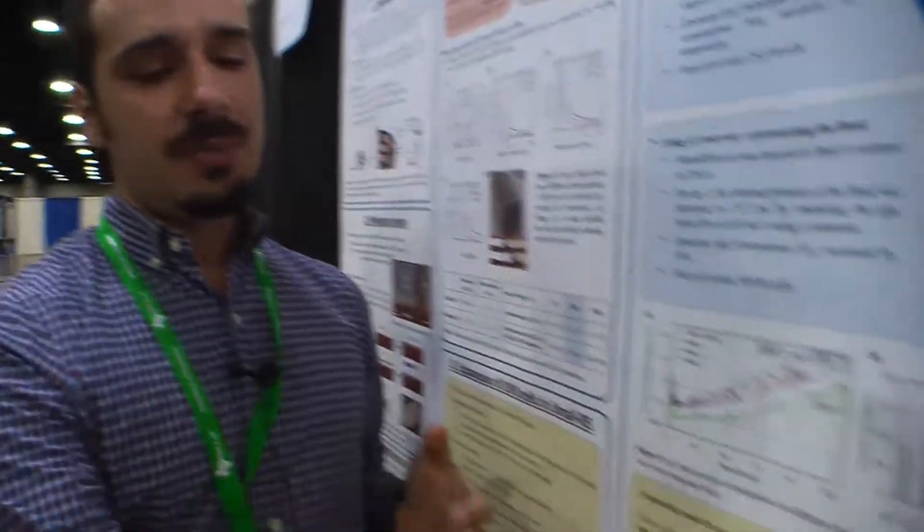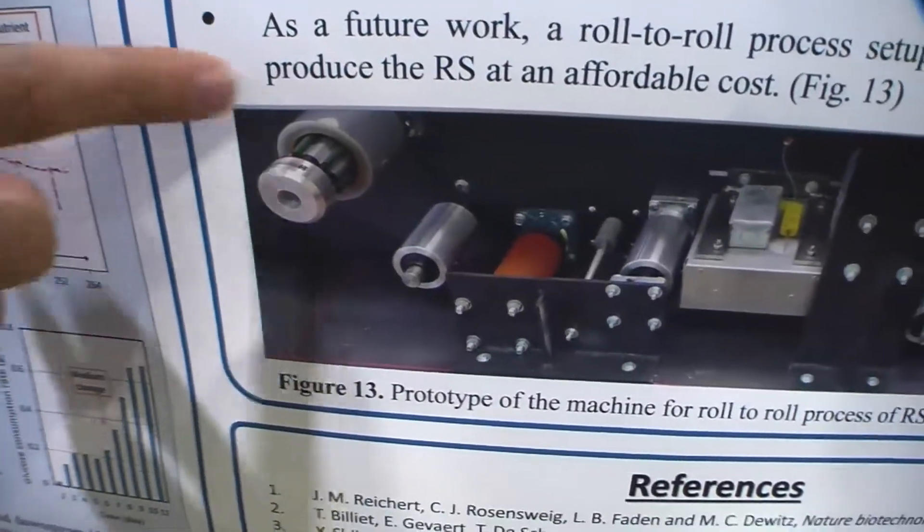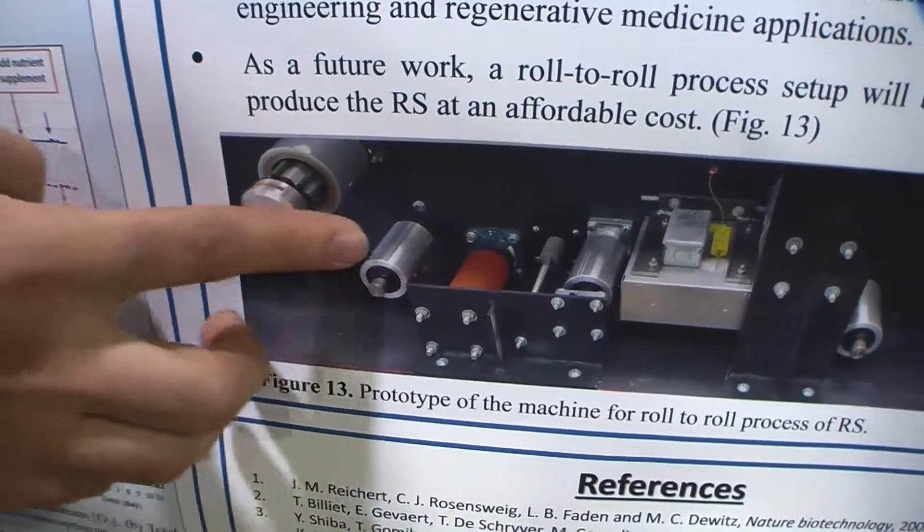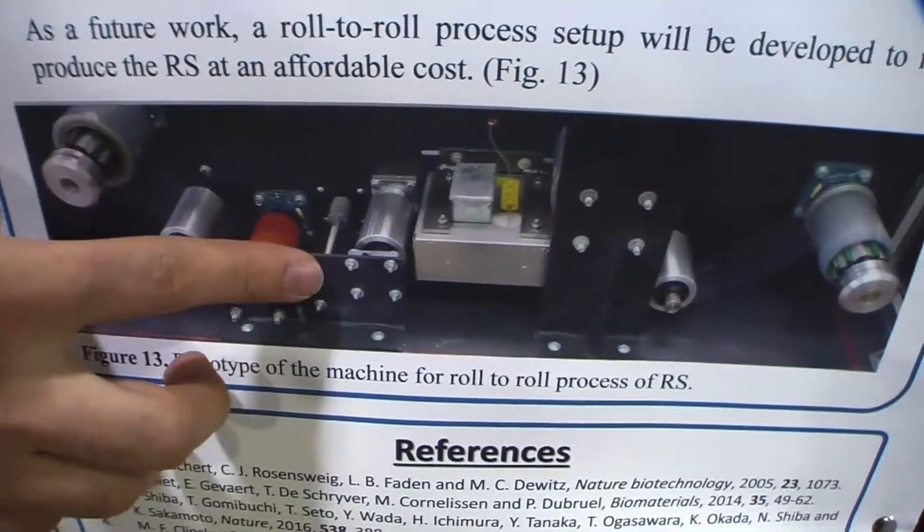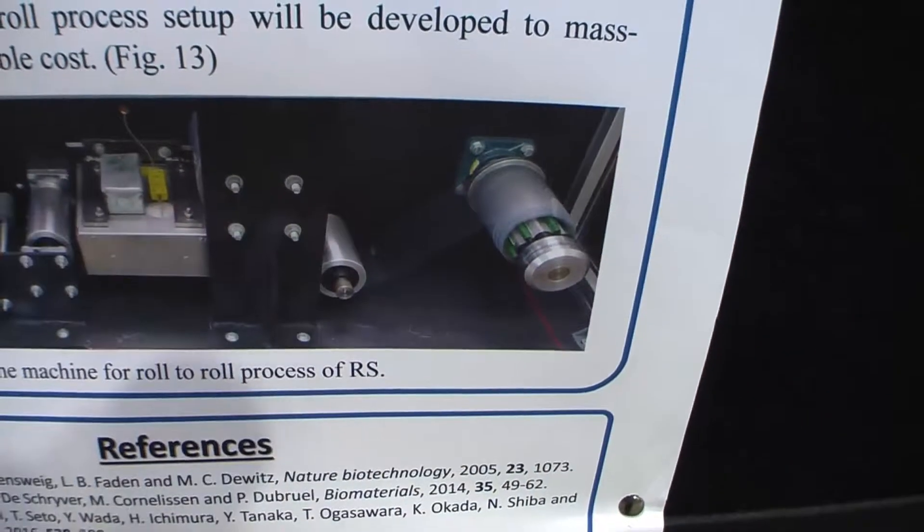For the future, we are trying to mass produce this with the help of a roll-to-roll process. Right now, we are doing it manually, but for the future, we will make everything roll-to-roll. The sheets will come in, they will be UV imprinted, then cured, then wrapped around a rod. So it will be mass-produced and very affordable.